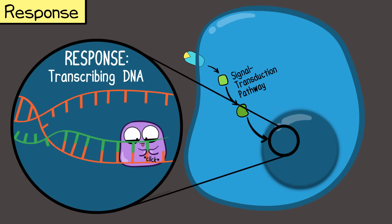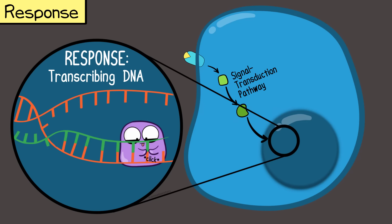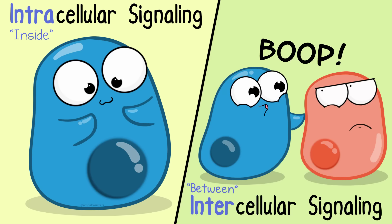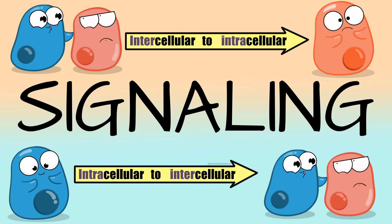Cell signaling can involve intracellular signaling, which occurs within the cell itself, and intercellular signaling, where a cell communicates with another cell. In many cases, signaling involves both signaling between cells and also signaling within cells.